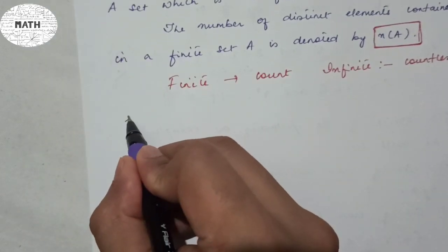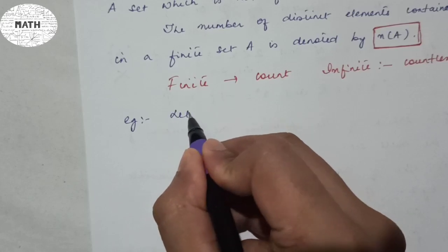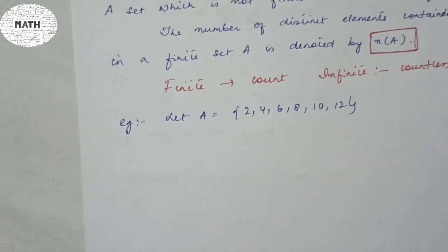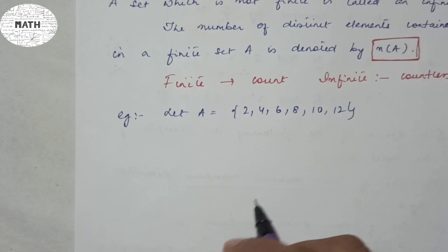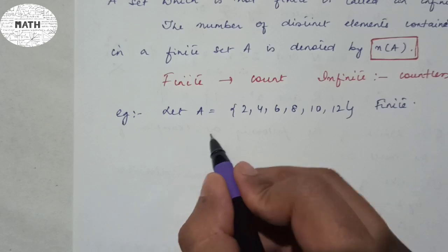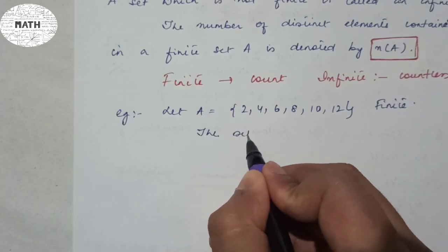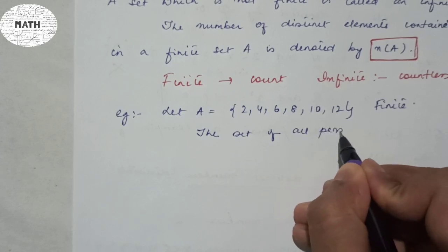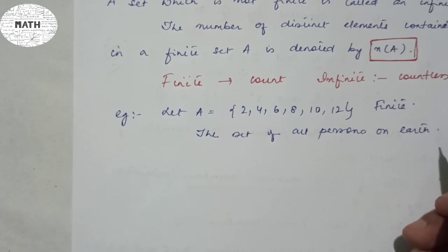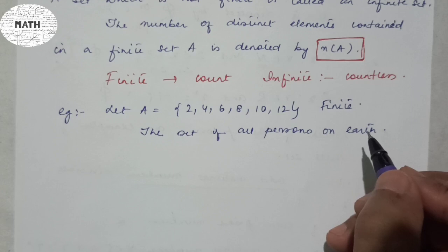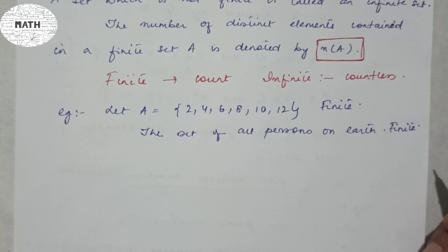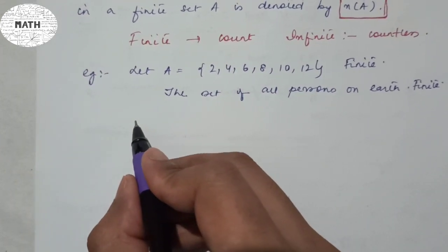For example, if A = {2, 4, 6, 8, 10, 12}, you can count the elements, so this is a finite set. Similarly, the set of all persons on Earth is finite because we can count it by some means or another.